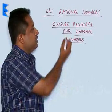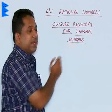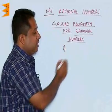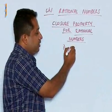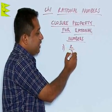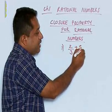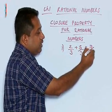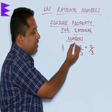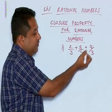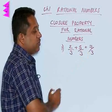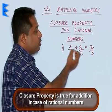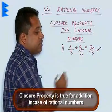Next, we are going to understand the closure property for rational numbers. For the first operation, addition, we take rational number 2 by 3 and add it to another rational number 5 by 3. We find that the result is 7 upon 3. When we add two rational numbers, the result is also a rational number. So, I can say that for addition, the closure property holds good in case of rational numbers.